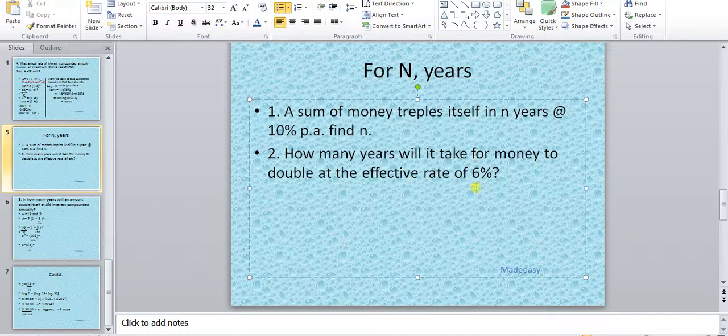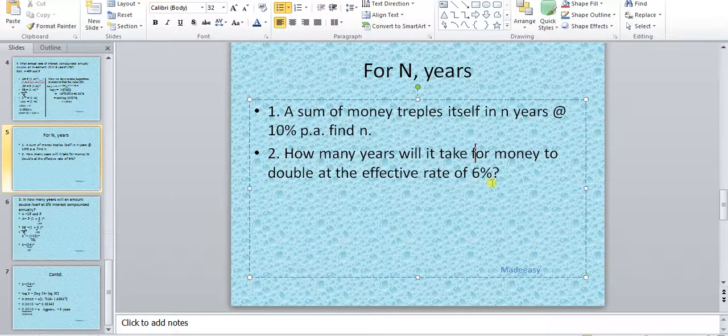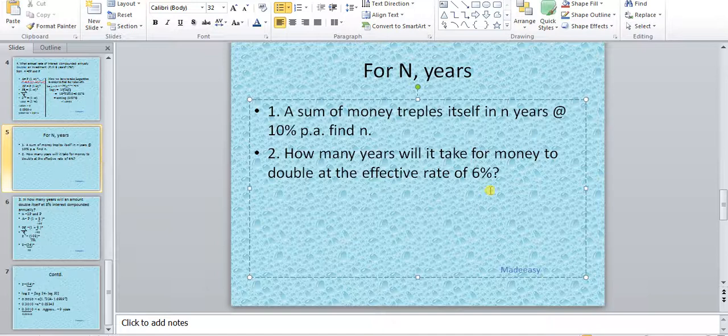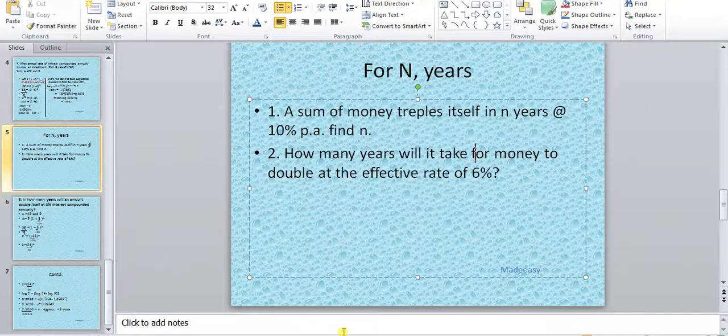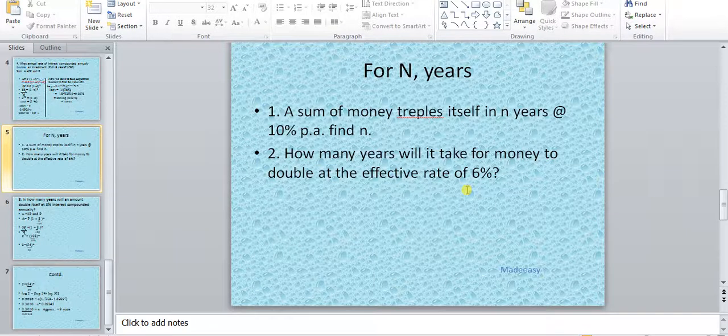The effective rate of interest is 6% itself. It is already given. Instead of writing rate percent, they have written effective rate of 6%. So we haven't been asked to find out the effective rate of interest. It is itself effective, meaning the rate is the effective rate.